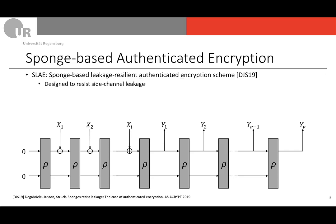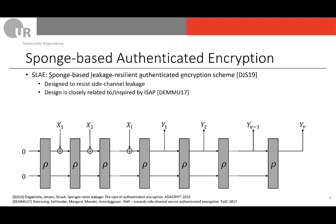This sponge-based encryption scheme SLAY is designed to resist side-channel leakage. Its design is closely related to and inspired by another sponge-based scheme, ISAP, from 2017, which is currently a finalist in the NIST standardization process for lightweight cryptography. An important difference between SLAY and ISAP is that SLAY is based on T-sponges — in our case the function ρ is a random function — whereas for ISAP this is a random permutation.